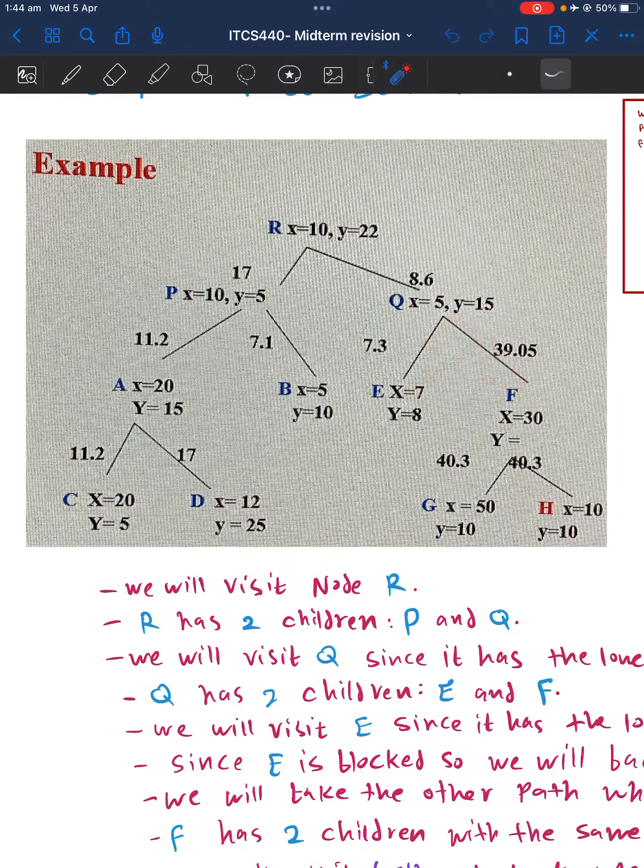Now F has two children, it has 40.3 for both of the children. So let's say we visit G. G is not the goal, backtrack, go to the other route which is H, which is our goal.